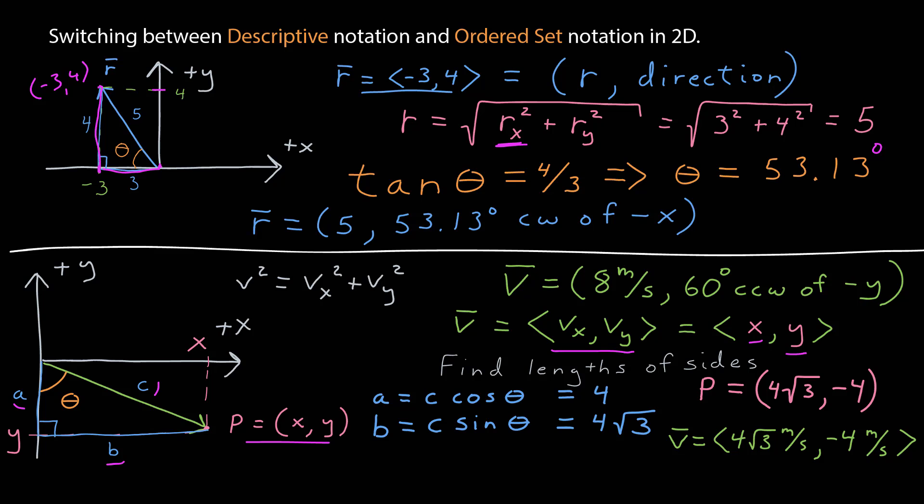Remember the relationship between the magnitude and the ordered set numbers. v squared has to equal vx squared plus vy squared, which means the ordered pair numbers have to have the same units as the magnitude. The magnitude in this case is in meters per second.